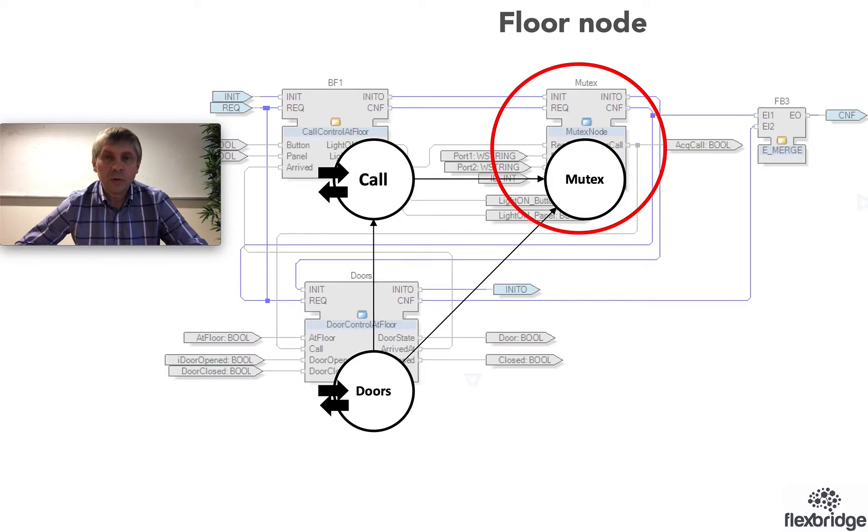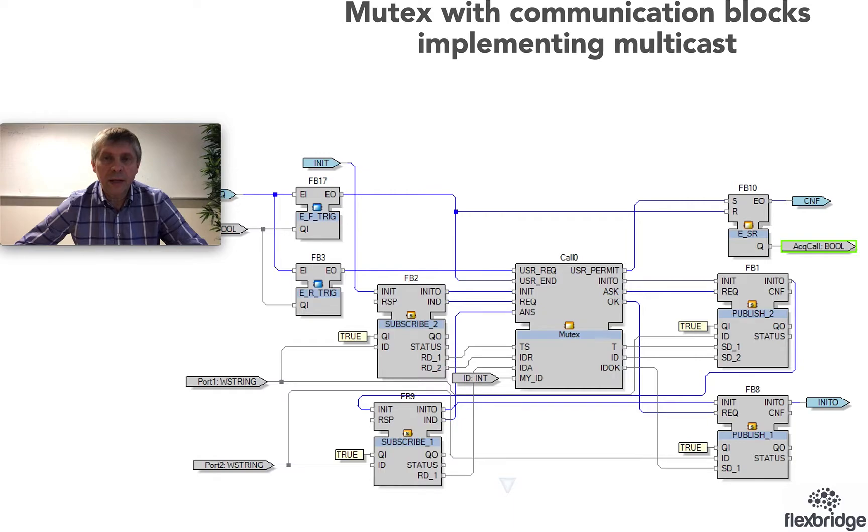The mutex block is again another composite block, which means that the block is defined as a network of other function blocks. In the center there is a mutex block that contains the key logic of mutual exclusive access to the motor, while those blocks subscribe and publish on the right and left hand side. These actually implement message passing via UDP protocol, and this is a mechanism how two floor nodes can communicate with each other.